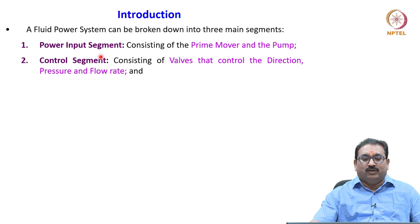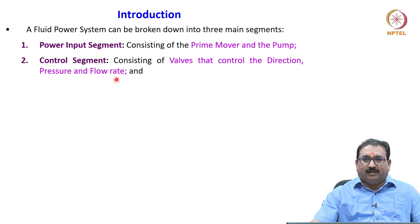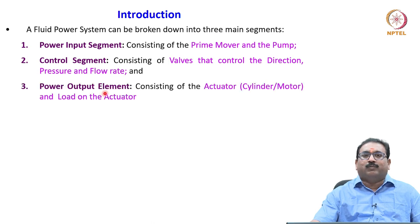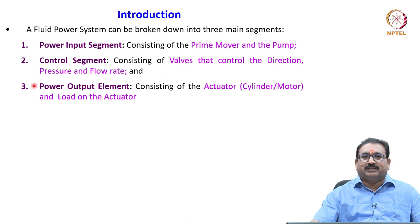The second is the control segment, consisting of valves that control the direction, pressure, and flow rate — known as directional control valves, pressure control valves, and flow control valves. The third important segment is the power output segment, consisting of an actuator — either a cylinder or hydraulic motors — and the load on the actuator. For any fluid power system, whether oil hydraulics or pneumatics, these are the main elements.